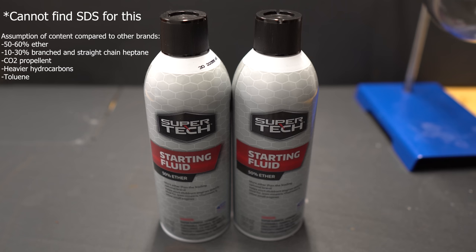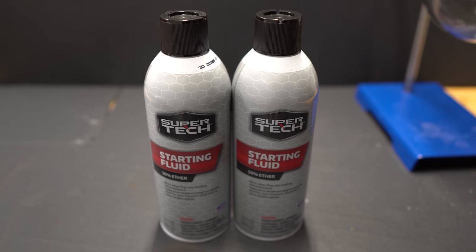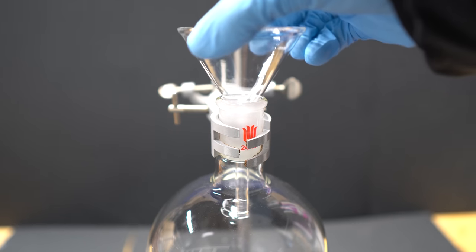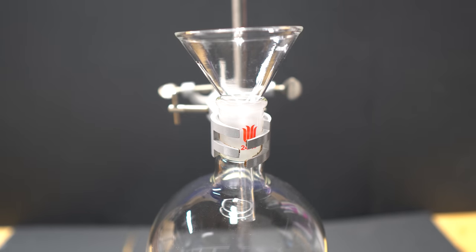So we're going to extract heptane and diethyl ether from starting fluid. We're going to use the 50% ether starting fluid just because we can get a lot more out of it compared to the 20% one.